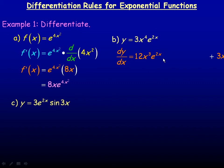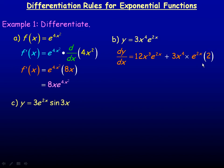Then we go plus the first function, 3x to the 4th, times the derivative of e to the 2x. The derivative of e to the 2x, very similar to what we did before, will have e to the 2x in it, and then we multiply by the derivative of the exponent, which is 2. The only simplification I'd make is to multiply that 2 by 3x to the 4th, writing that last part as 6x to the 4th e to the 2x. So the full derivative of 3x to the 4th e to the 2x is 12x cubed e to the 2x plus 6x to the 4th e to the 2x.